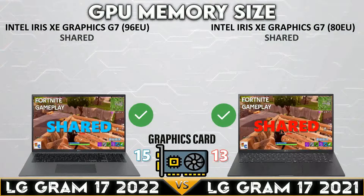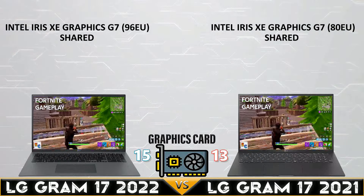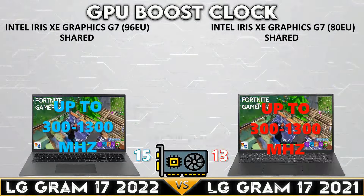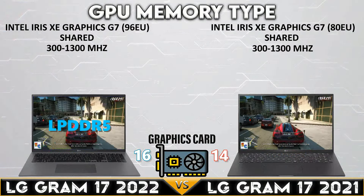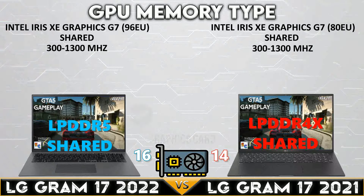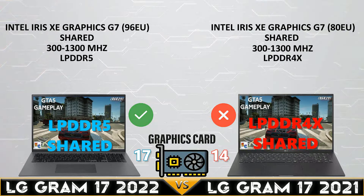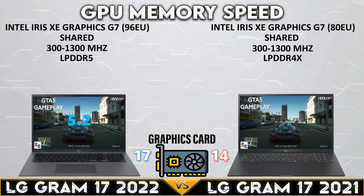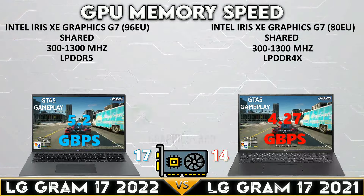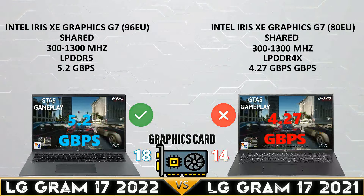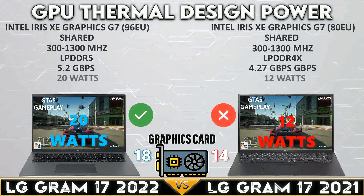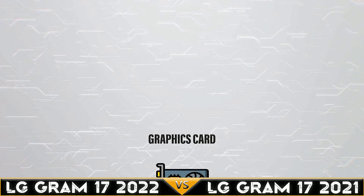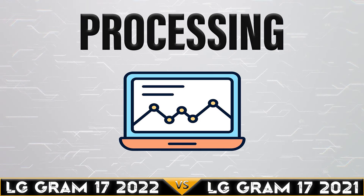Both devices have shared graphics memory. Both laptops have a boost clock up to 300 to 1300 MHz. The LG Gram 17 2022 supports newer LPDDR5 memory with up to 5.2 Gbps memory speed, and has a higher GPU thermal design power at 20 watts.